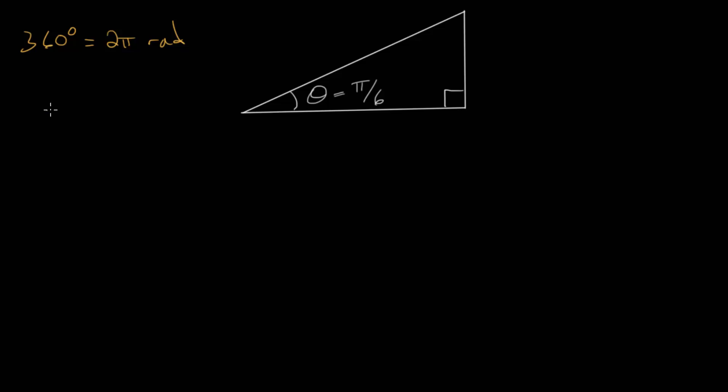So when we have pi over 6, what we can do is essentially divide each side of this equation by 12, so that on the right hand side we get pi over 6 radians, and on the left hand side this would be equal to 30 degrees.